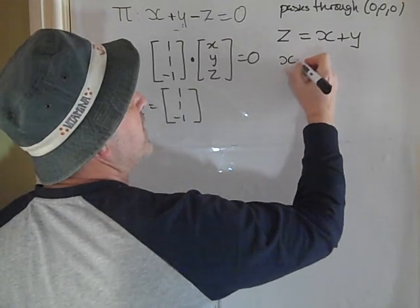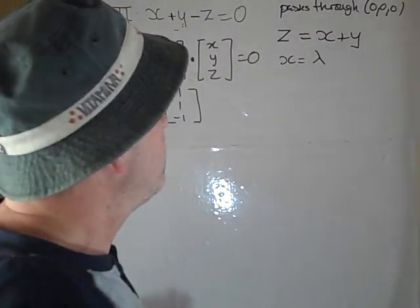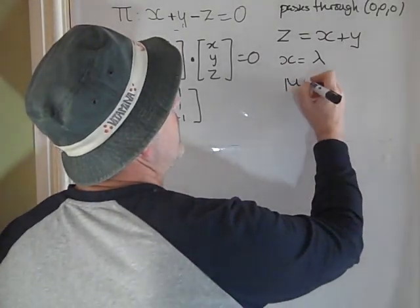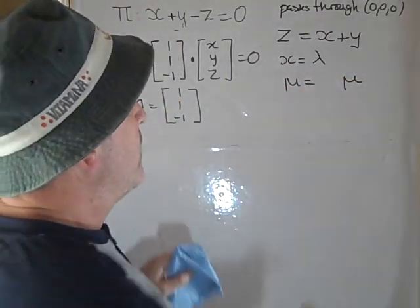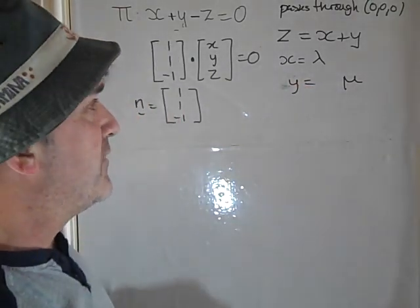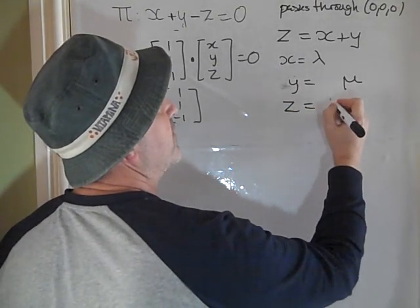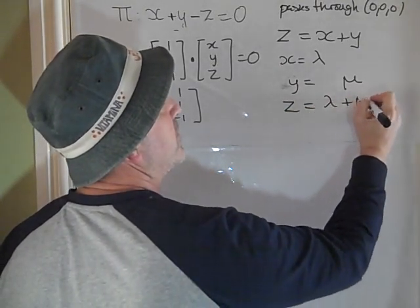So we can call x the parameter lambda, that is any number that we want to be. y will be a parameter mu, so that would be another parameter, so we can give it any value that we want. And therefore z is going to be lambda plus mu.